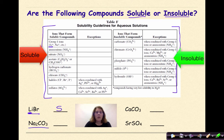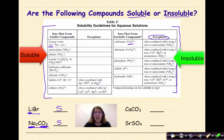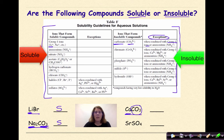How about Na2CO3? Again, I see a group one metal — as soon as I see that, it's going to be soluble. You might say the CO3 falls in the insoluble list, which is true, but the exception states it's soluble when combined with a group one ion, and sodium qualifies. Next, CaCO3: calcium shows up in several places but isn't always soluble. The CO3-2 polyatomic falls under insoluble compounds. Checking the exceptions — group one or ammonium only — calcium is group two, so CaCO3 is insoluble.